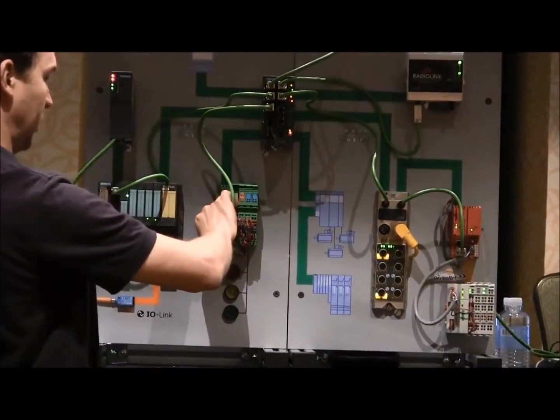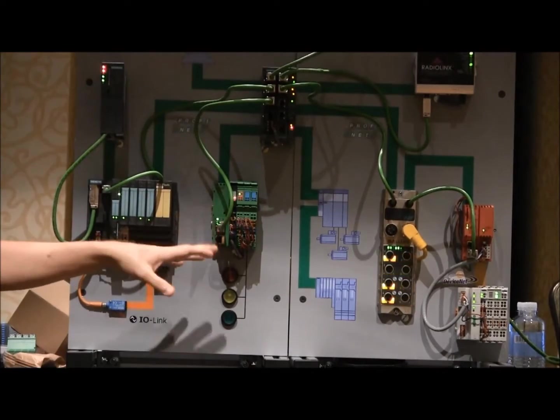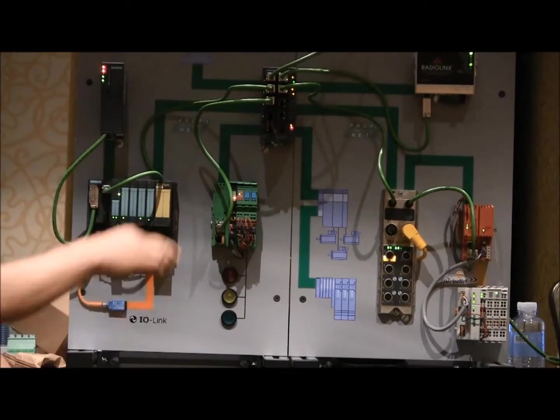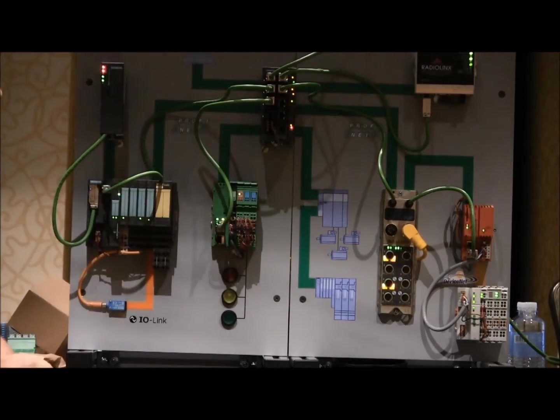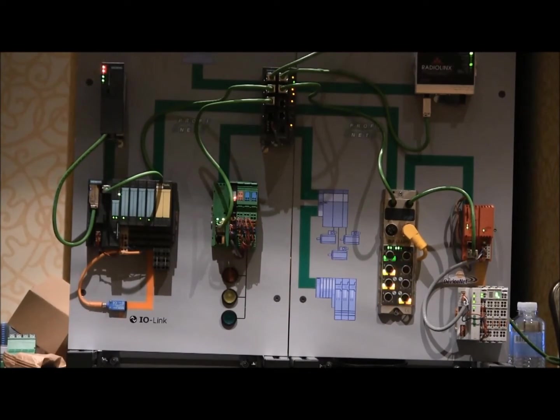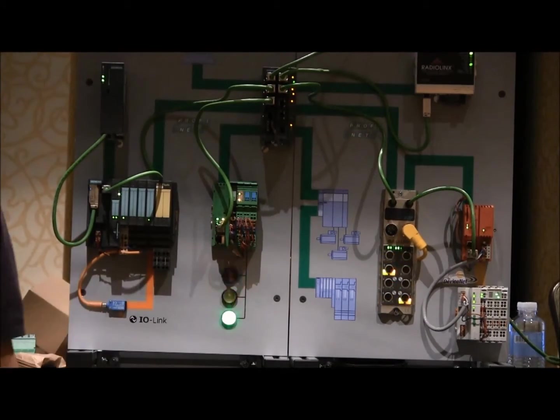So now this device is going to come up and say, 'Hi, I'm out here but I don't know who I am.' The switch is going to talk to it and then the controller is going to figure out it's there and go ahead and assign its name and IP address. This device has never had any kind of configuration information on it. Now we're up and running again.